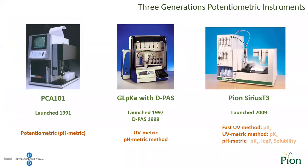In this slide, I would like to show you the three generations of potentiometric instruments for the determination of physicochemical properties designed by Pion, formerly Sirius. I worked with the PCI-101 throughout my thesis, an automatic potentiometer which uses a pH-metric technique for the determination of pKa and log P. The GL-pKa with D-PAS introduced the UV-metric technique for pKa and potentiometric solubility. Our current system, Pion Sirius D3, reduces by a factor of 10 the amount of sample required compared to the GL-pKa, incorporating the same techniques plus the addition of Fast UV, which allows measuring pKas in just a few minutes at very low concentrations.